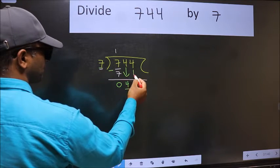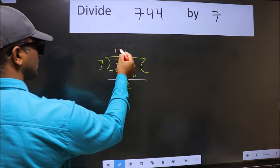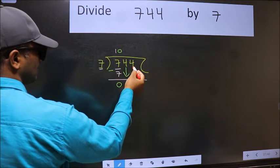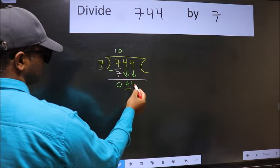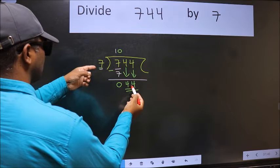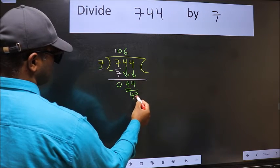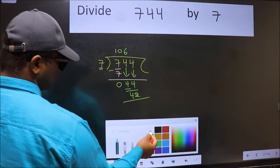The rule to bring down the second number is we should put zero here, then only we can bring this number down. Now 44, a number close to 44 in the 7 table is 7×6=42. Now we should subtract.